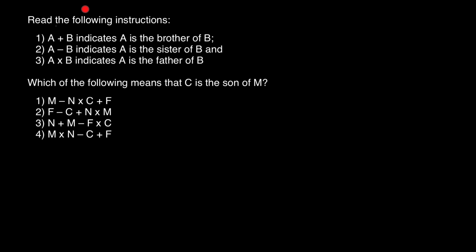Here are our instructions. Here's the question: which of the following means that C is the son of M? We are given four variants, so we are going to build four pedigree charts and find the answer.